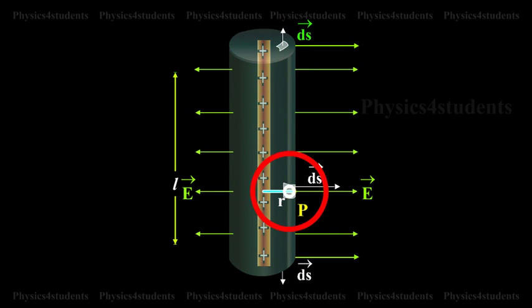Consider a very small area ds on the Gaussian surface. By symmetry, the magnitude of electric field will be the same at all points on the curved surface of the cylinder and directed radially outward.